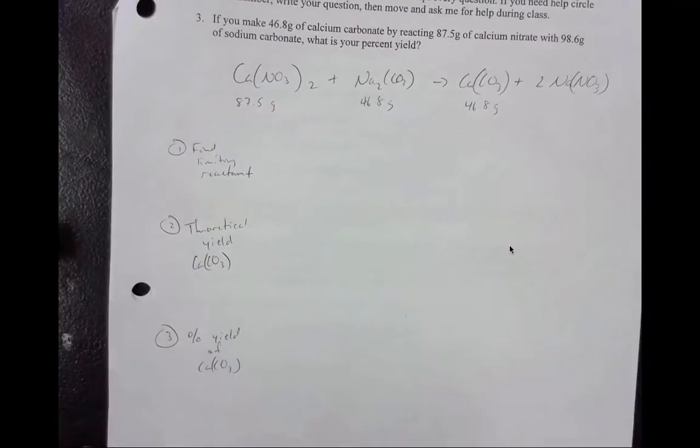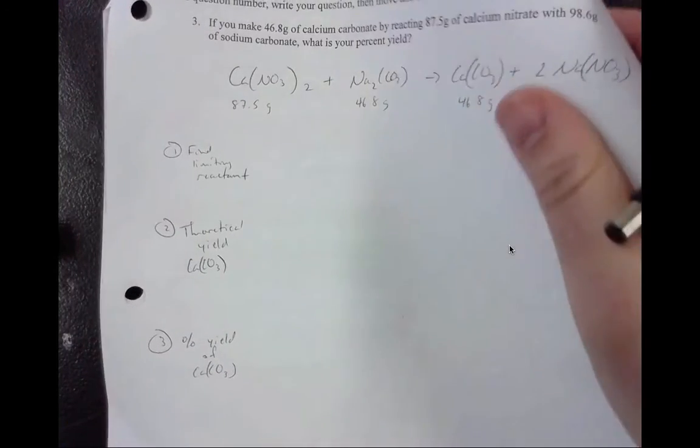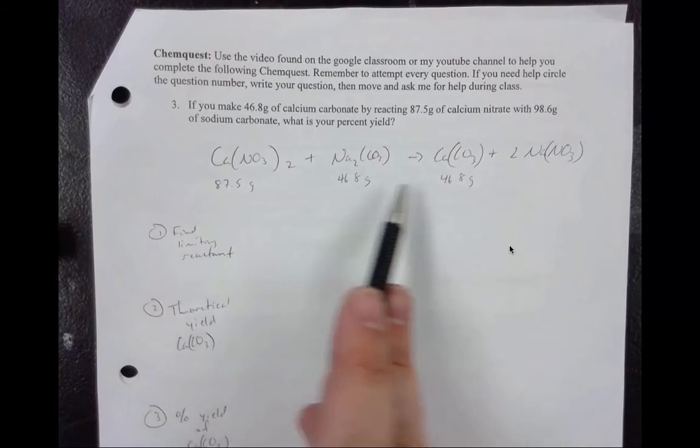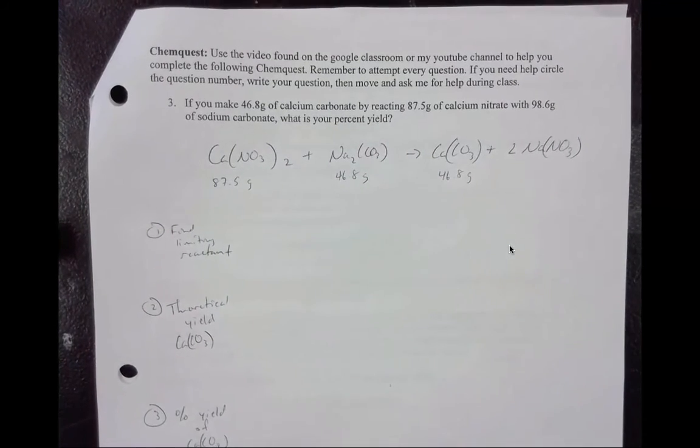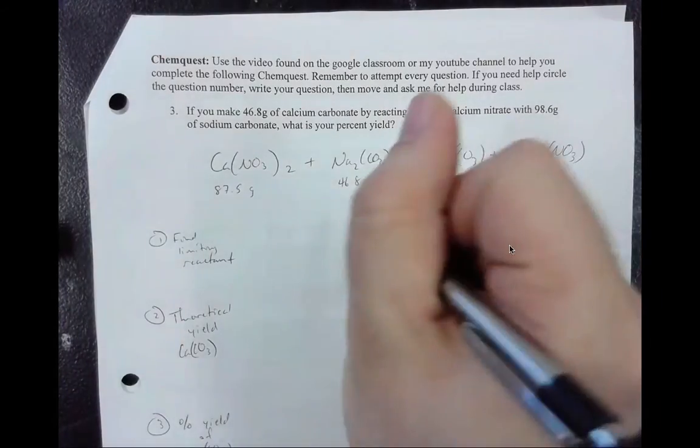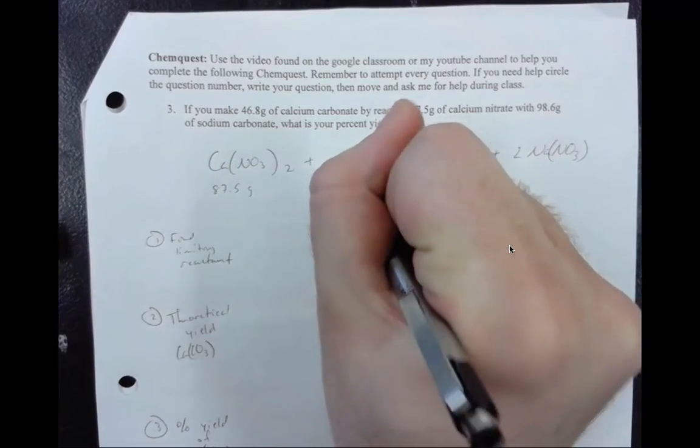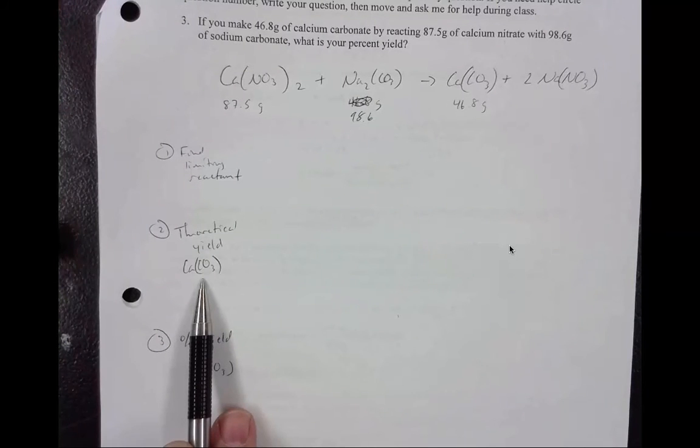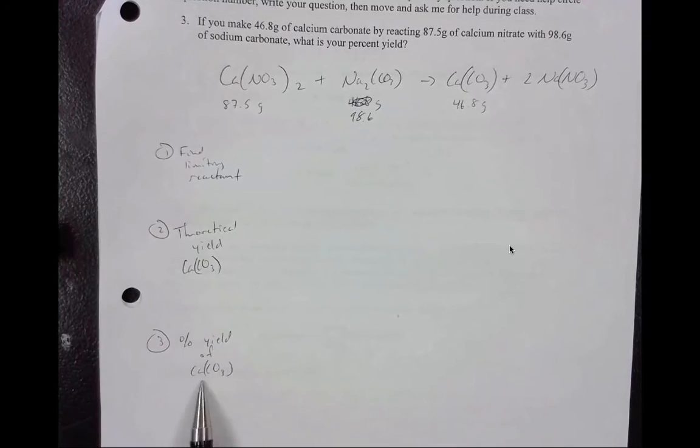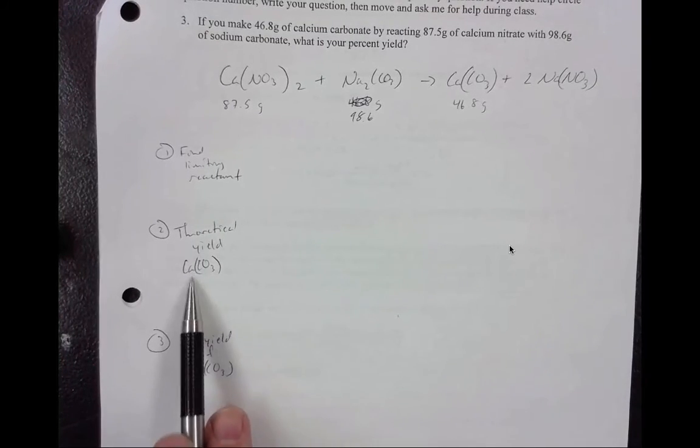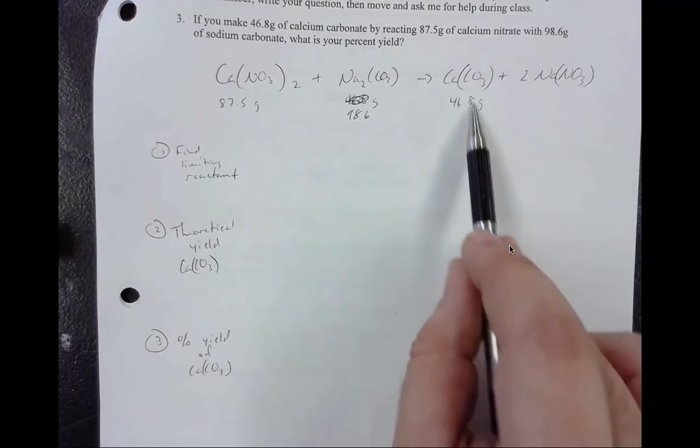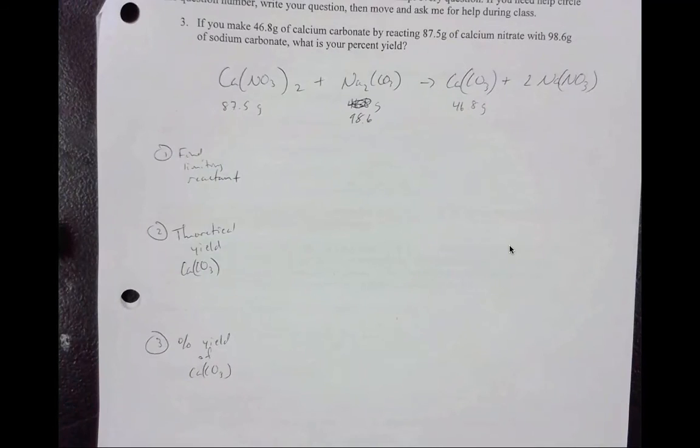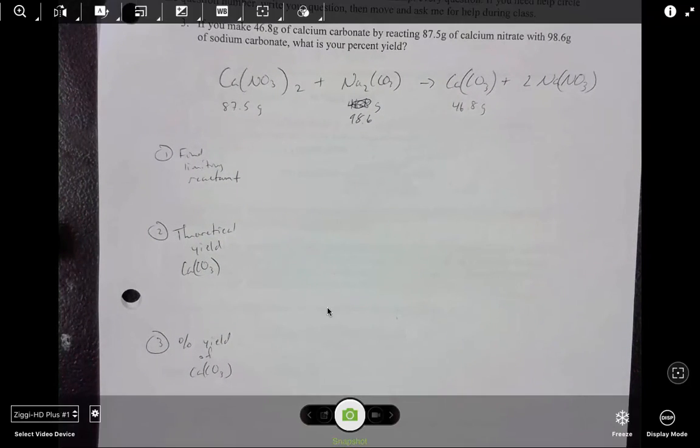So guys, now what I want you to do is I want you to try to do question 3. Question 3 is just like question 2. So I put out the balanced equation for us. I wrote the amount that you have of each just underneath. And I messed up one of them. So it tells us we have, this is not a 4, this is 98.6 grams. So just make sure you change that. And then you're going to do the same three steps. You're going to find the limiting reactant. Calculate the theoretical yield. In this case, it's calcium carbonate. And then you're going to calculate the percent yield of calcium carbonate. It's calcium carbonate because we have 46.8 grams of it at the end that we need to compare to how much we could actually calculate. When you're finding the limiting reactant, you just have to pick one of these. If you have any questions, please make sure you circle it, bring it to class, and ask me. I hope everyone has a good day.